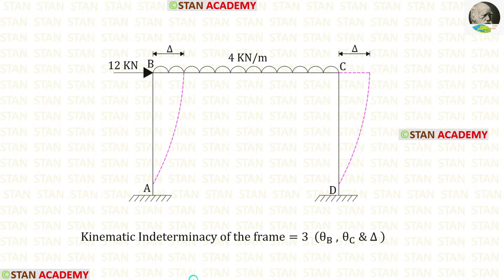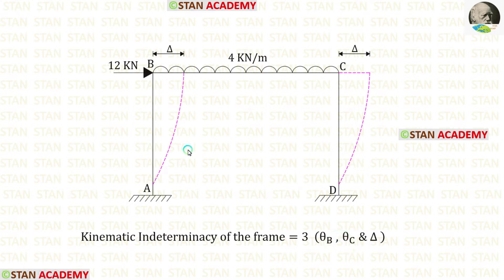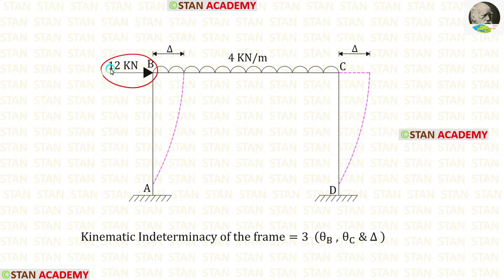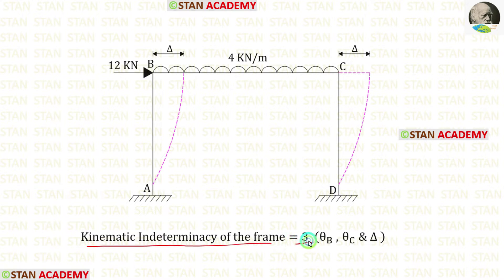Now let us find the kinematic indeterminacy of the frame. In this frame, at joints B and C there will be slope — we have θB at point B and θC at point C. This frame is a sway type frame. Because of the point load acting towards the right side, there will be sway towards the right side. So the kinematic indeterminacy of the frame is 3: slopes at points B and C, plus the sway.